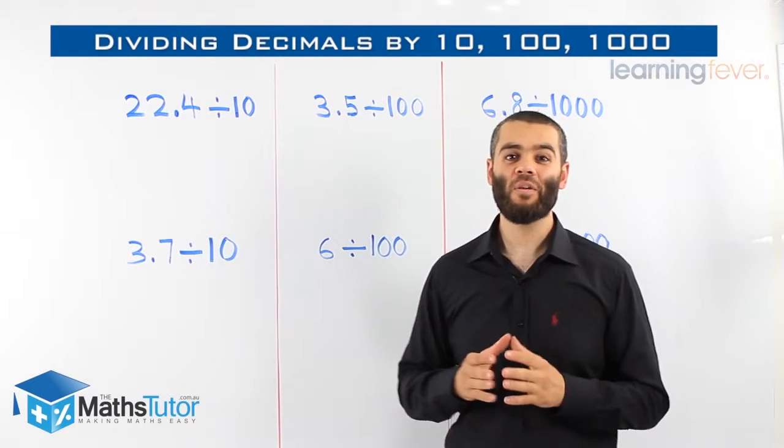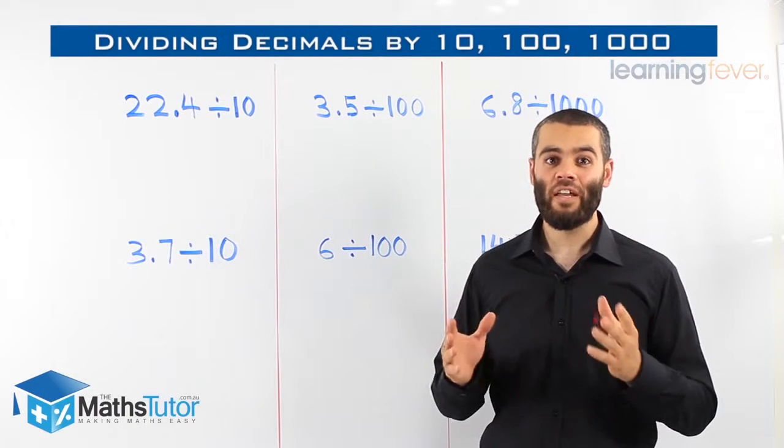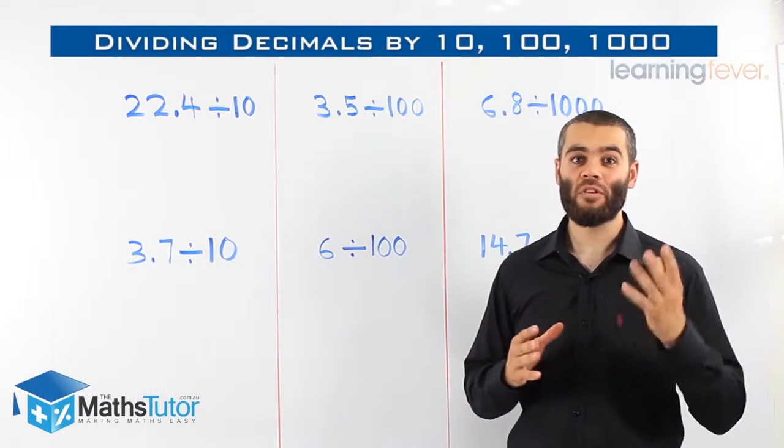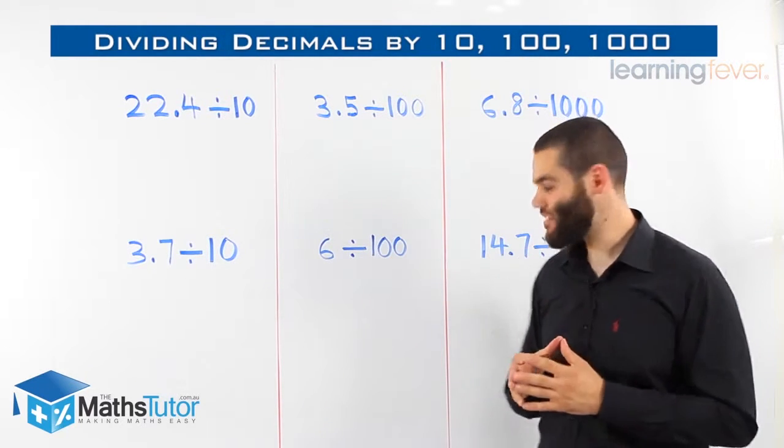In a previous lesson, we learned how to multiply a decimal by ten, hundred, or a thousand. Now, I'm going to show you how to divide a decimal by ten, hundred, or a thousand. Let's see how it's done.